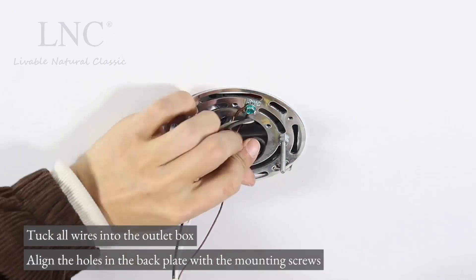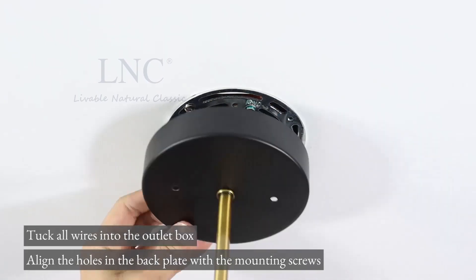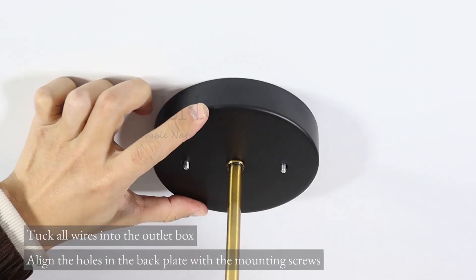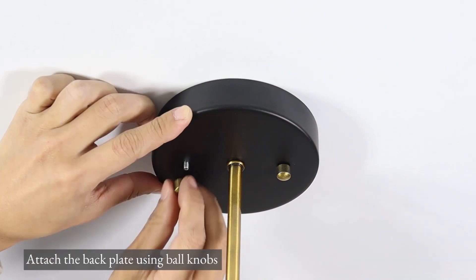Tuck all wires into the outlet box. Align the holes in the back plate with the mounting screws. Attach the back plate using ball knobs.